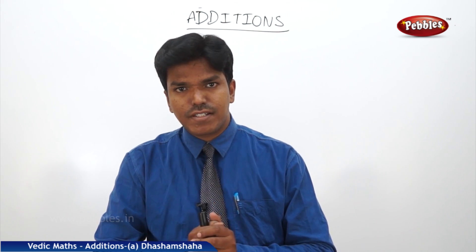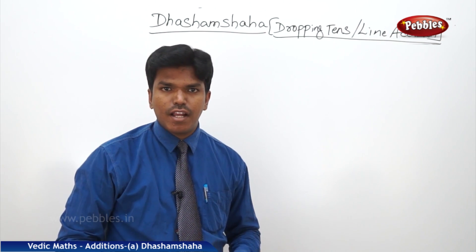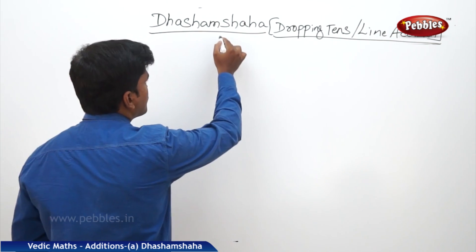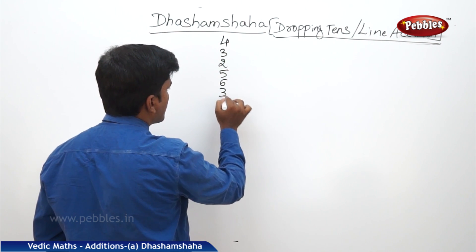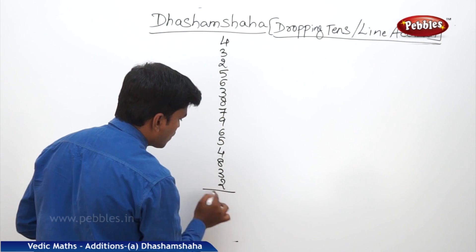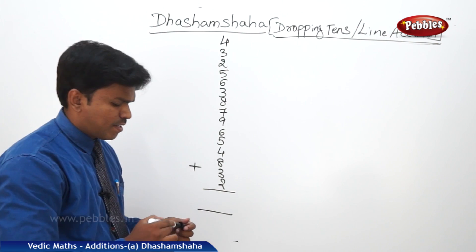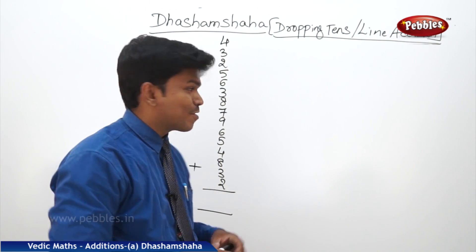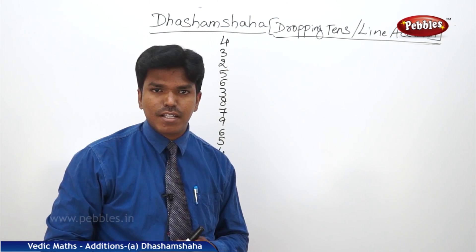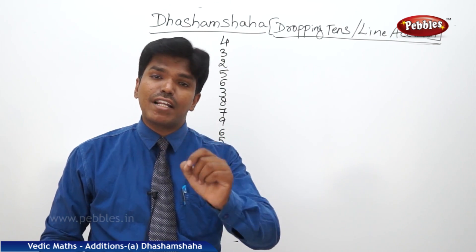Now let us start the additions. In additions, the first concept is Dashamsaha. The English meaning is 'dropping tens method' or 'line addition'. Let us take one example. I have given a small problem. You need to add all these numbers. These many numbers — I know you will feel a little difficult. But in Vedic Mathematics, by using the sutra Dashamsaha, we can do this problem very easily and within very less time.